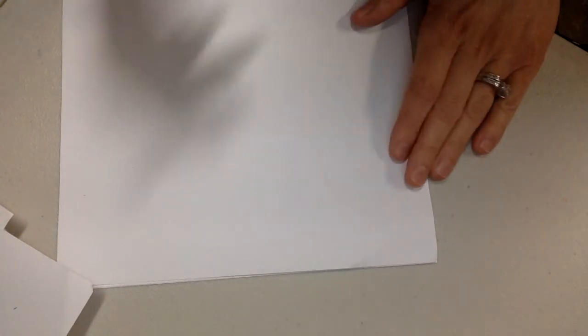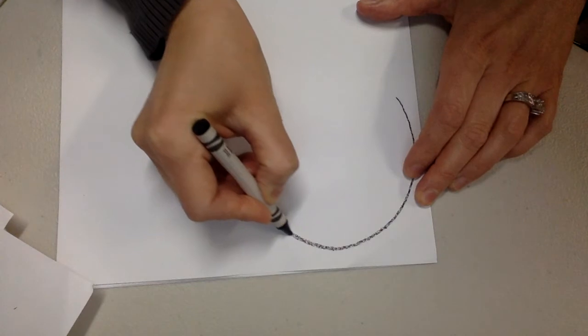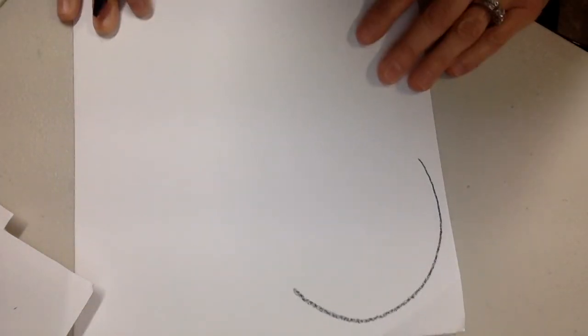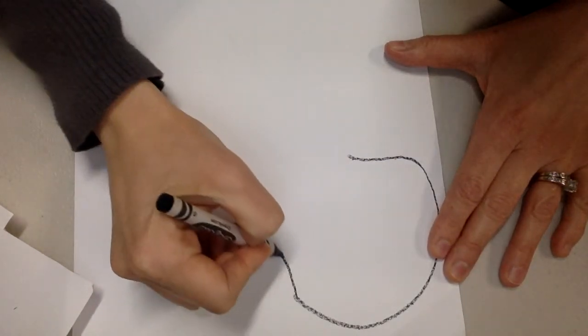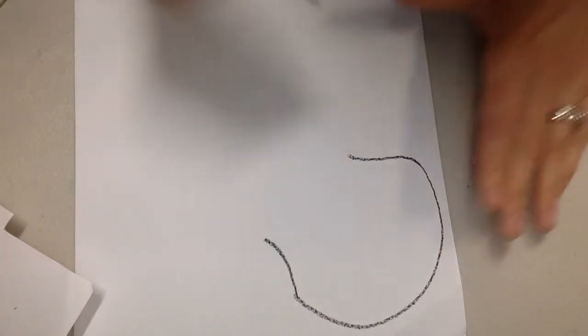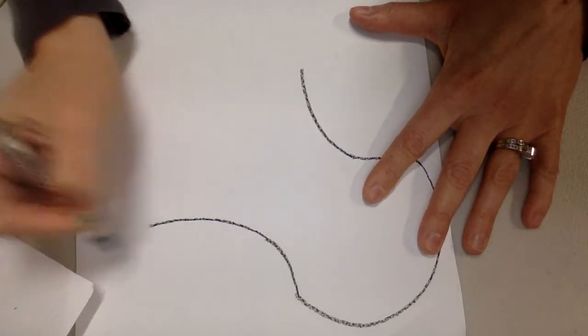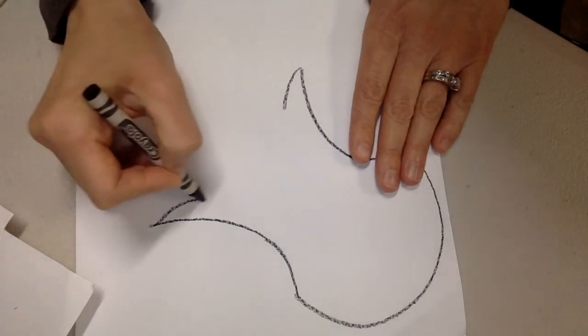In the bottom corner you're gonna go ahead and do this. Draw a curve. Then what we're gonna do, let me move this, we're gonna go in, in, and this doesn't have to be perfect. Out, out. So it kind of looks like a vase, right? In, in, or a flower.